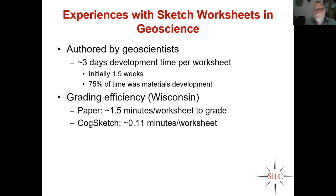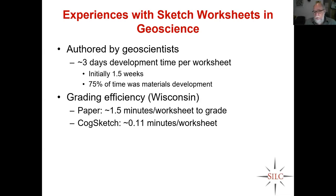Grading efficiency: Bridget decided to really go all out. She made paper versions and CogSketch versions that were closely matched and did the grading for both sets of students. On paper, about a minute and a half per worksheet to grade — and she's really fast. But CogSketch was a lot faster: 0.11 minutes per worksheet. That's awesome.